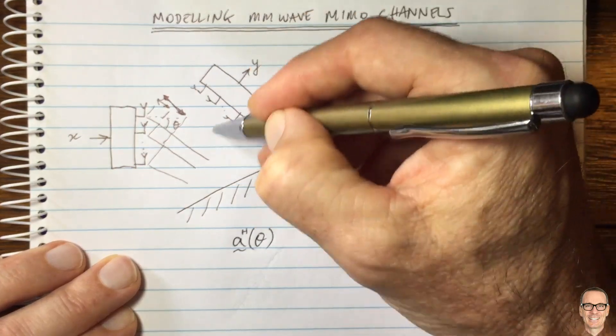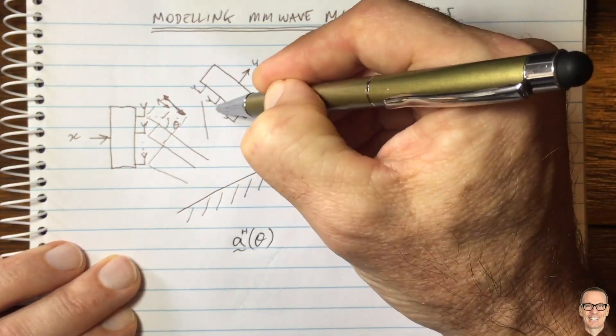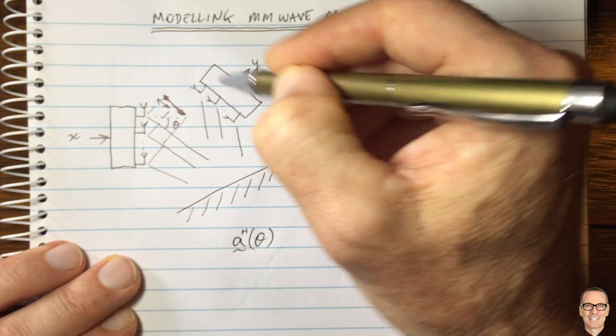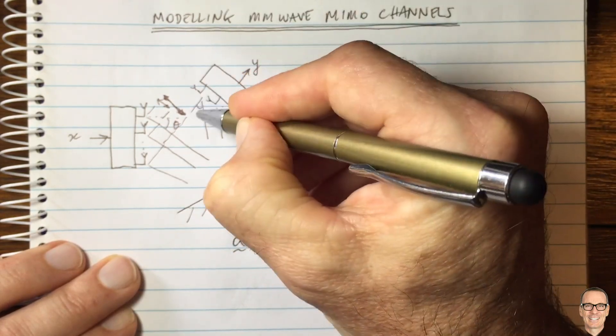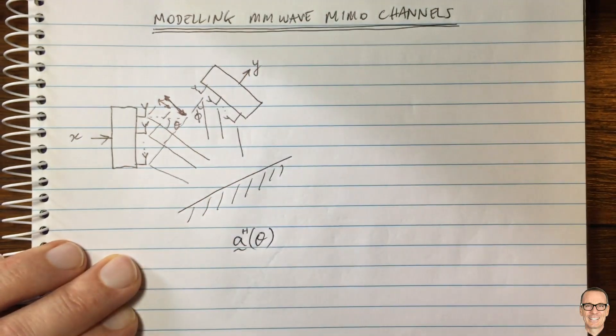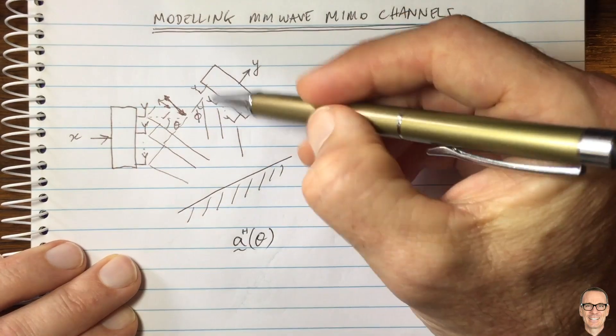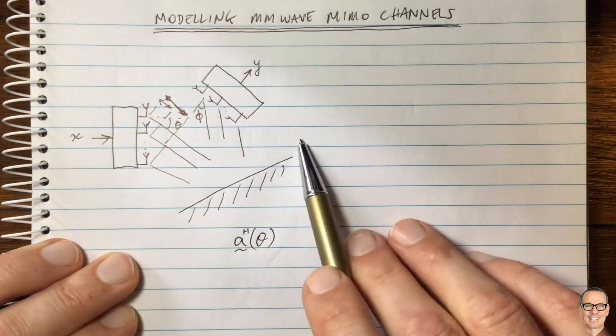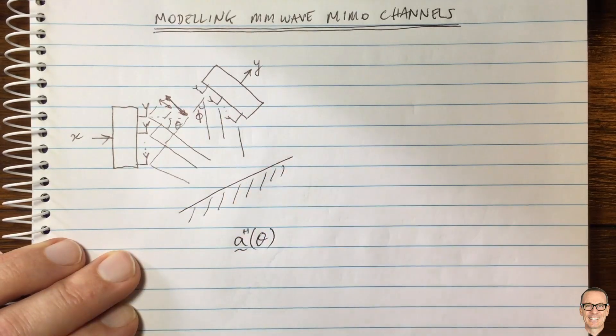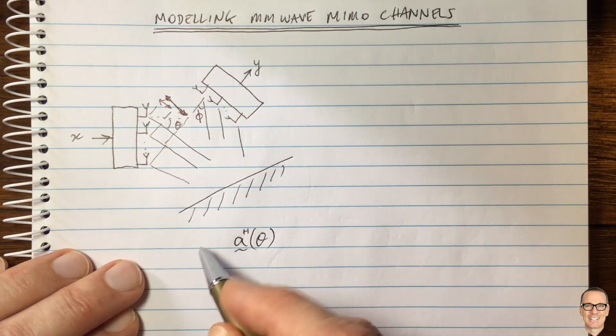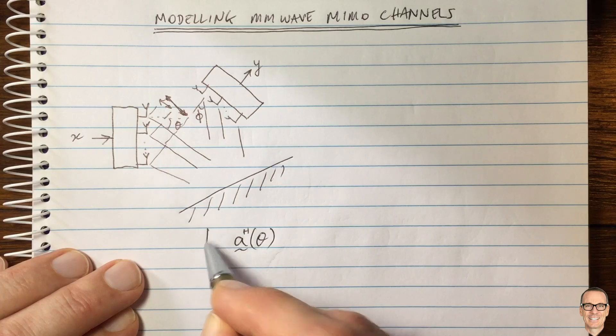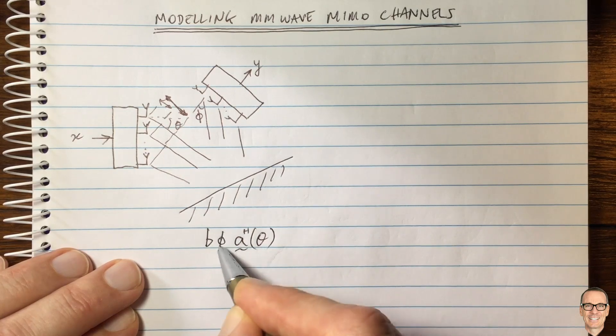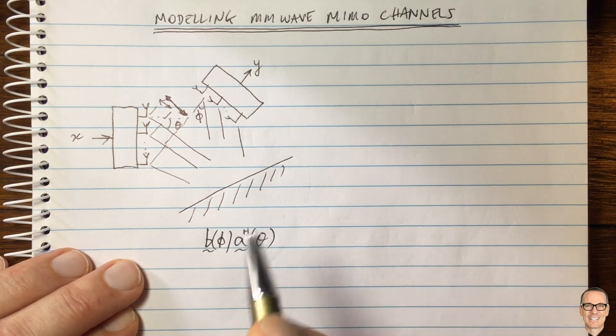And then, of course, it's going to reflect off that reflector and go towards the receiver. And the same thing is going to happen at the receiver side. So this one's going to be characterized by its angle, which is a different angle. And it relates to how that reflector is positioned relative to the receiver array. And so this one's going to be likewise an angle phi here, which gives us a vector b.